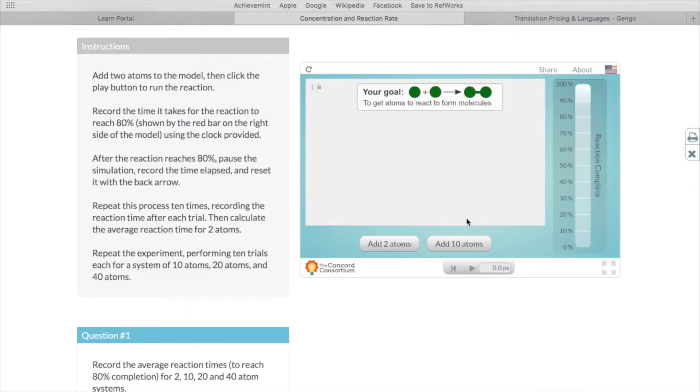So as soon as these two atoms have reacted to form a molecule you're going to hit pause and you're also going to write down the time that's shown here in picoseconds as the time it took for that reaction to occur. In this case because there's only two atoms they'll either be separate which would be 0% completion or together which would be a hundred percent completion.